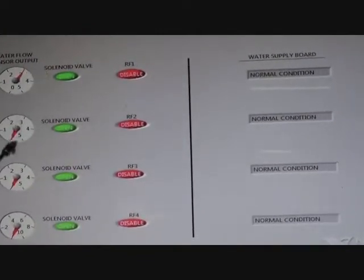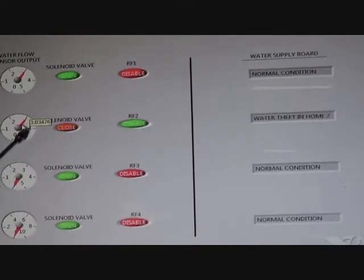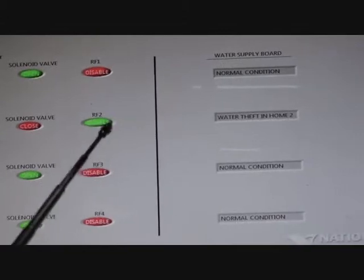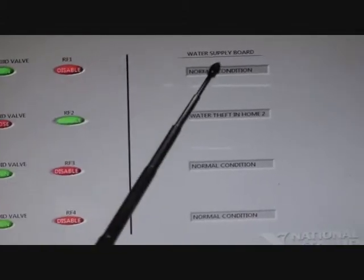And let us take home 2. Here if we have it beyond 3 then the solenoid valve will be mentioned as closed and when it is closed the RF transmitter is enabled and the signal is sent to the water supply board and it is mentioned as water theft in home 2.